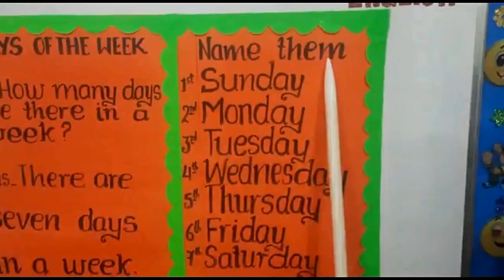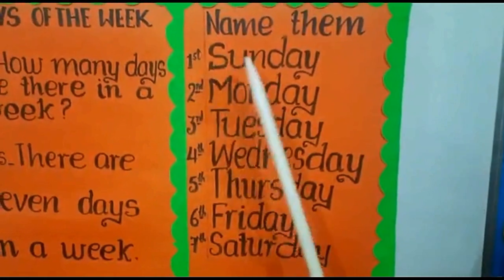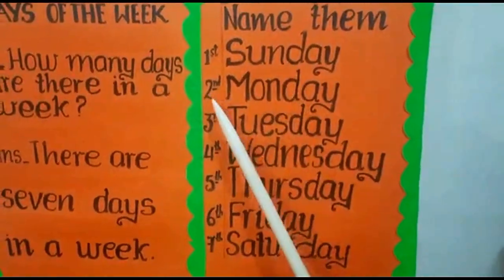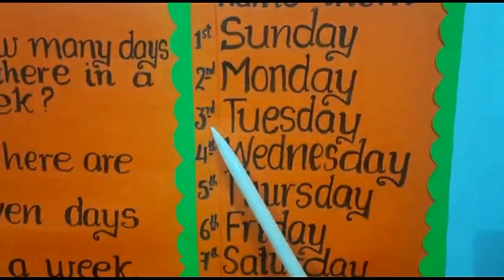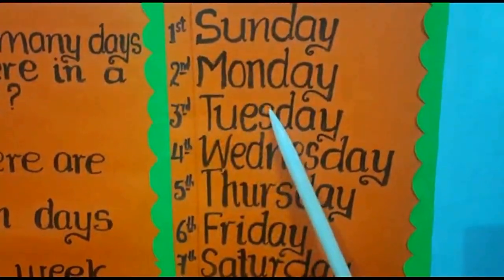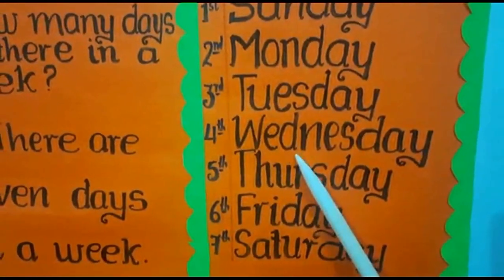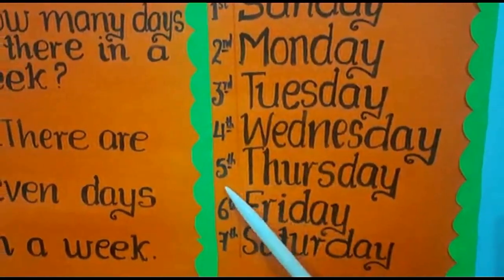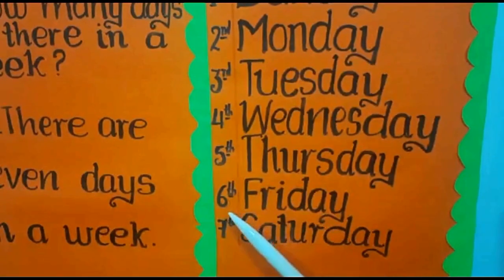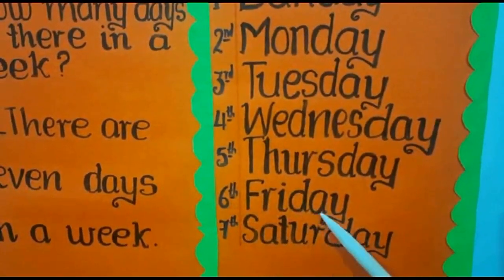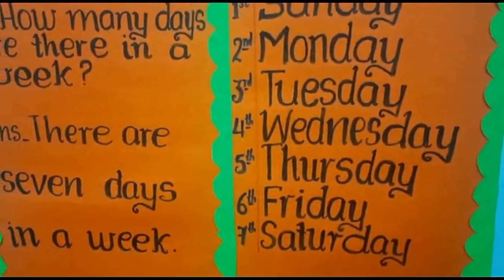Name them. First day, Sunday. Second day, Monday. Third day, Tuesday. Fourth day, Wednesday. Fifth day, Thursday. Sixth day, Friday. Seventh day, Saturday.